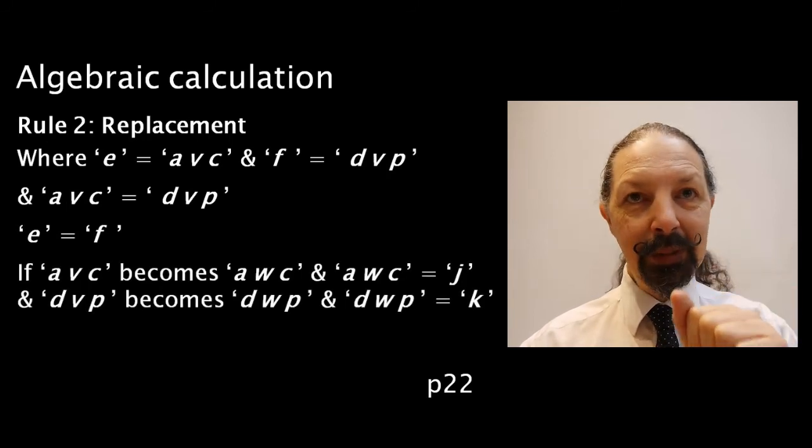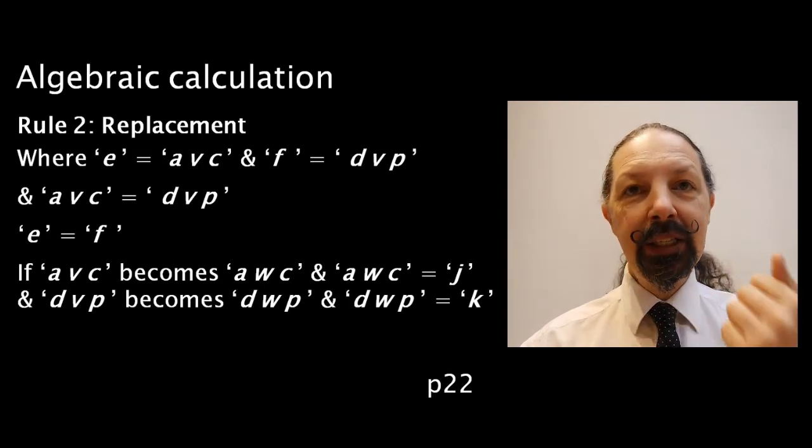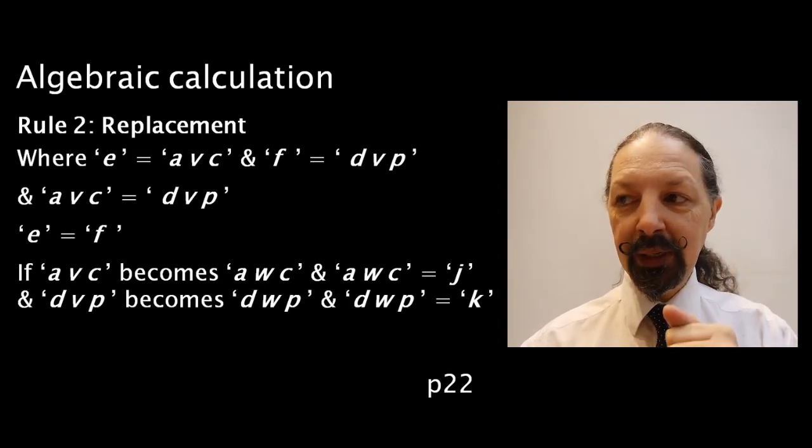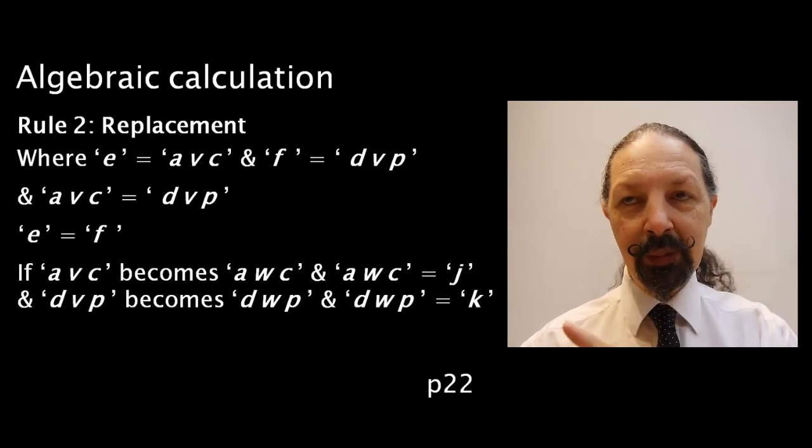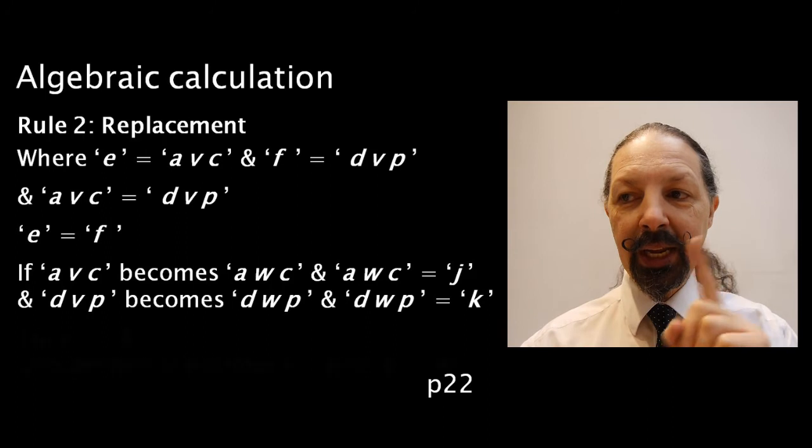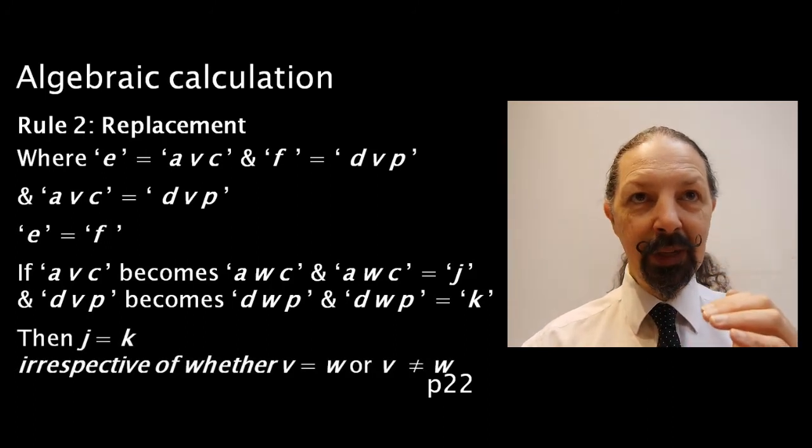If AVC becomes AWC, and we call AWC J, and DVP becomes DWP, and we call DWP K, and notice that the V's have changed to W's, then J equals K, irrespective of whether V is the same value as W or it has a different value.